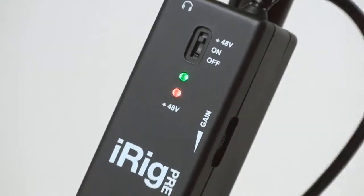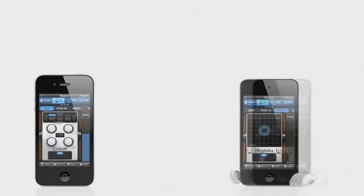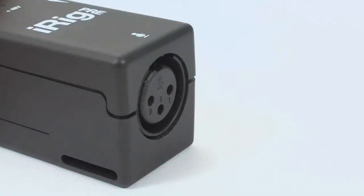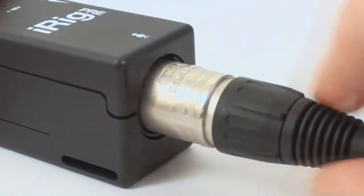Simply plug your iRig Pre into the headphone jack of your iPhone, iPod Touch or iPad, plug your microphone cable into your iRig Pre and then plug your mic cable into your microphone.